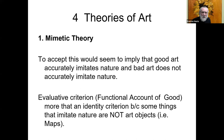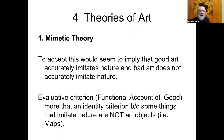If we accept this view, it would imply that good art is art which accurately imitates nature, and bad art does not accurately imitate nature. We would evaluate art and recommend works for their faithfulness — to the degree that they imitate or represent nature. So the evaluative criterion is: good art would do what art is supposed to do. And if art is supposed to imitate, then good art would be art that imitates well. It's not just an identity criterion — it's also an evaluative criterion.